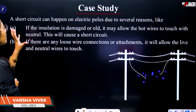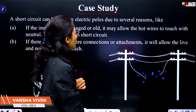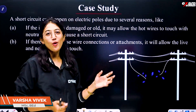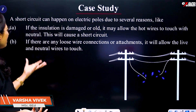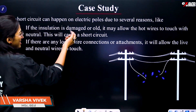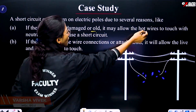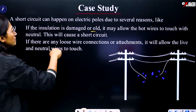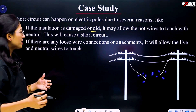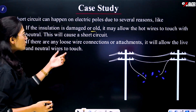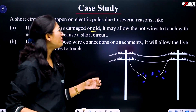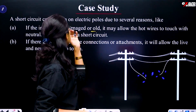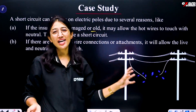The question is about short circuits. A short circuit can happen on electric poles due to several reasons. If the insulation is damaged or old, it may allow the hot wires to touch the neutral wire, causing a short circuit. Also, if there are any loose wire connections or attachments, it will allow the live and neutral wires to touch, causing a short circuit.